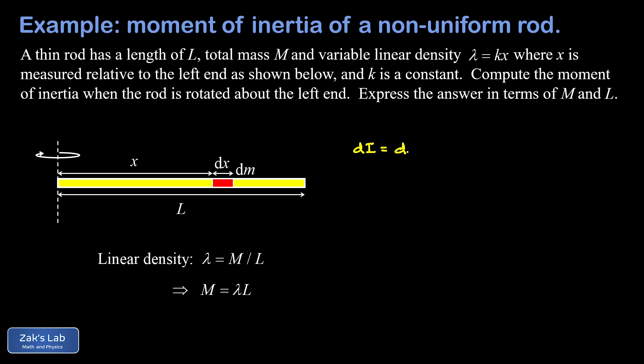And that's just mr squared, or in this case, our mass is dm, and our distance from the rotation axis is x. So we have dm times x squared. Now we need to write down that little dm in terms of x. And this is where we get to this second equation, where we were talking about linear density, I can always get a mass by taking linear density and multiplying by length.